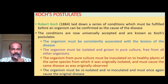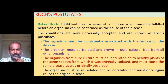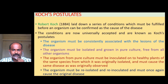Robert Koch laid down a series of conditions which must be fulfilled before an organism can be confirmed as the cause of a disease. These are now universally accepted and known as Koch's postulates. First, the organism must be consistently associated with the lesions of the disease. Second, the organism must be isolated and grown in pure culture. Third, the organism from pure culture must be inoculated onto healthy plants and must cause the same disease. Fourth, the organism must be re-isolated and re-inoculated and must once again cause the original disease.